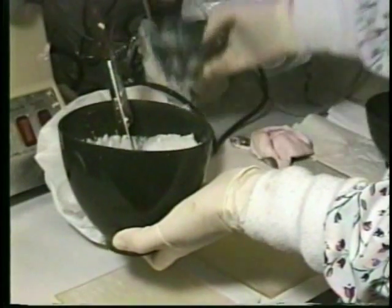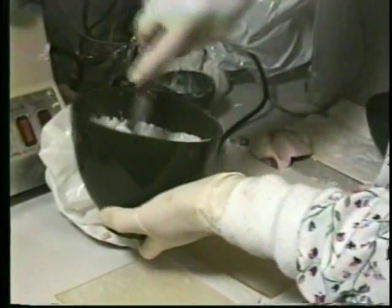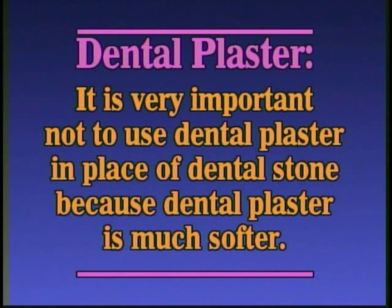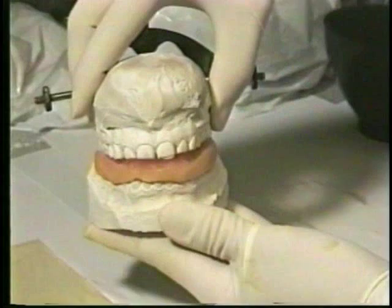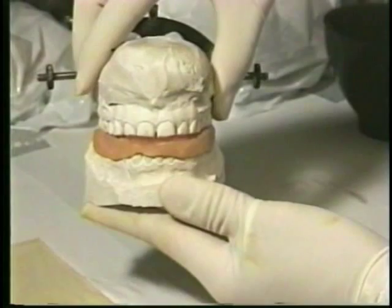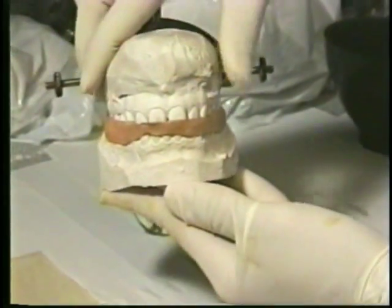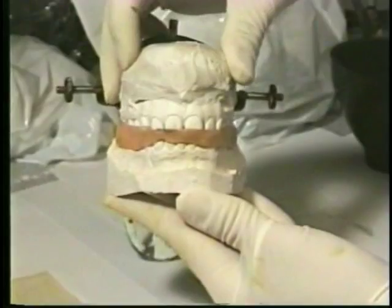Dental plaster comes in a powder also and looks just like dental stone. It's very important not to use dental plaster in place of dental stone, because dental plaster is much softer. Dental plaster is used primarily to mount stone models on the dental articulator.